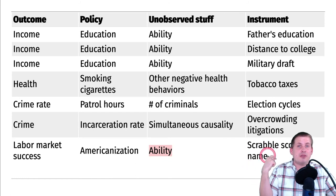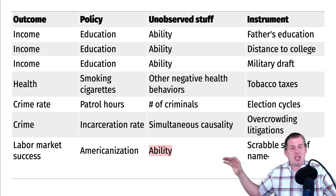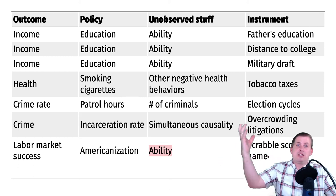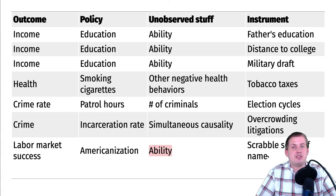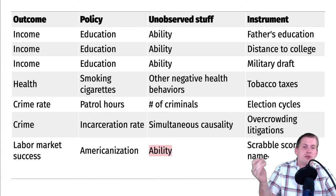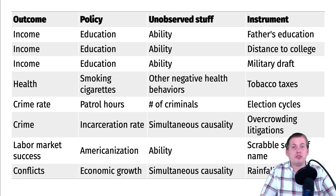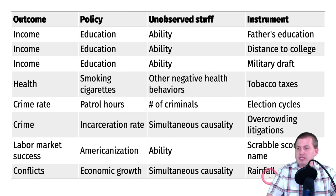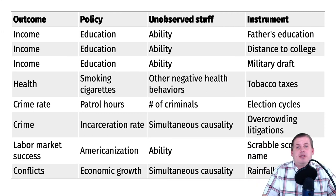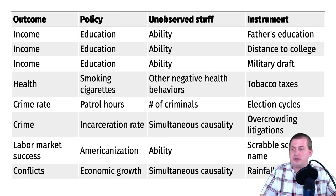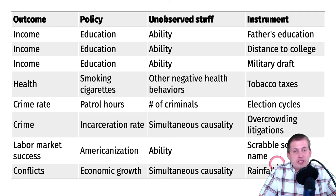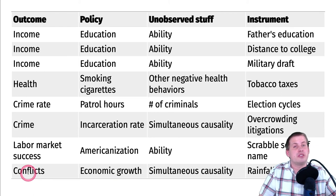If it takes you a long time to explain how the instrument works, that's probably a good sign it's weird enough. If you can find another pathway for the weirdness of someone's name causing labor market success other than assimilation into the predominant culture — good luck, that's going to be hard. One super common instrument you'll see in the world is weather, because that is fully exogenous — nobody caused an earthquake or rainstorm. People often look at the effect of economic growth on civil war and use rainfall as an instrument.